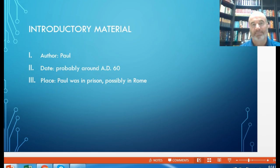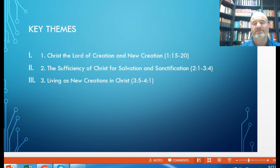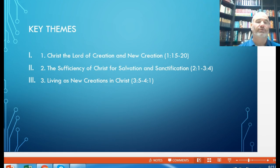The key themes in Colossians include Christ as the Lord of creation and the new creation that comes from being in Christ, the sufficiency of Christ for both salvation and sanctification, and living as new creations in Christ. As Paul pointed out to the Corinthian church, in Christ we are new creatures.